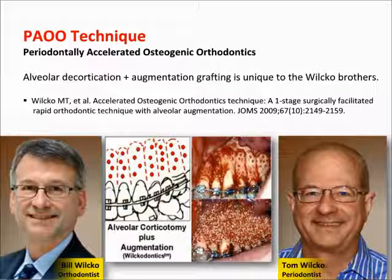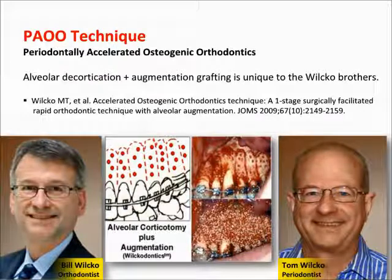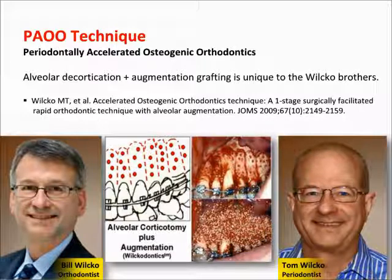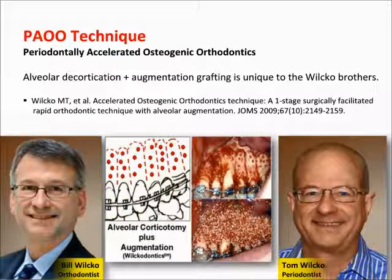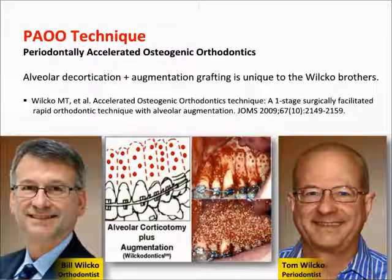Selective alveolar decortication is a surgical technique that facilitates orthodontic treatment and is performed within a week of the placement of active fixed orthodontic appliances. Following full-thickness flaps, both labial and lingual cortices are intentionally injured with a surgical burr, followed by augmentation bone grafting. Trabecular bone density is immediately reduced, tooth movement is accelerated, and the dimension and therapeutic pliability of the alveolar base is increased, enabling a greater range of tooth movement.